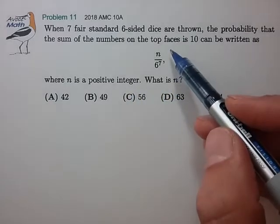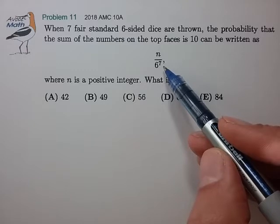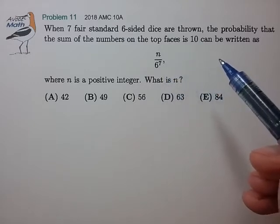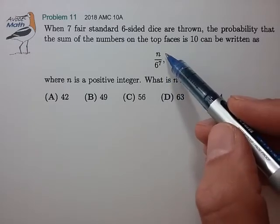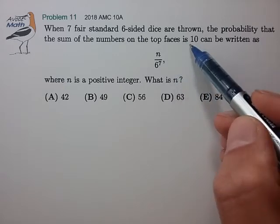Okay, so I notice in this expression 6 to the 7 is the number of ways that the 7 dice can be thrown to sum to any value. So our task is to find the number of ways that we can throw the 7 dice to sum to the value of 10.